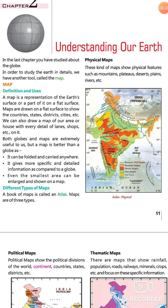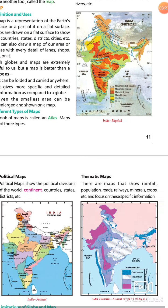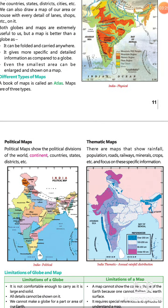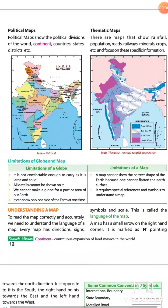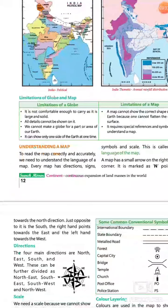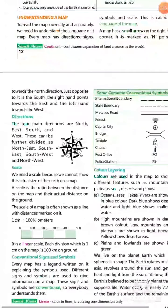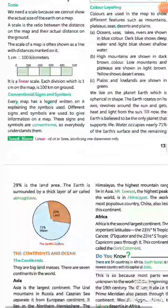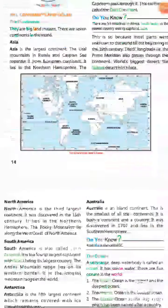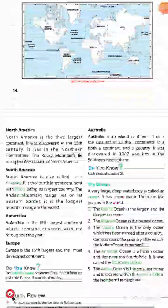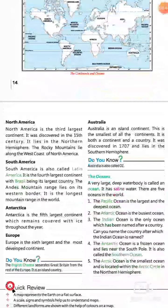Maps are of three types. First is a political map. Second is a thematic map. And third is a general map.